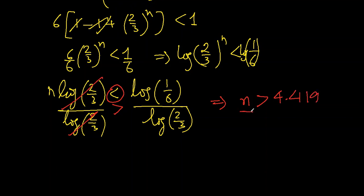So n is greater than 4.419, and n cannot be a decimal number. So n has to be the next number, which is 5. That is the final answer.